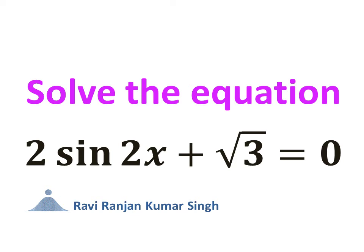In this video, we will learn to solve the multiple angle equation: 2 times sine of 2x plus square root of 3 is equal to 0.